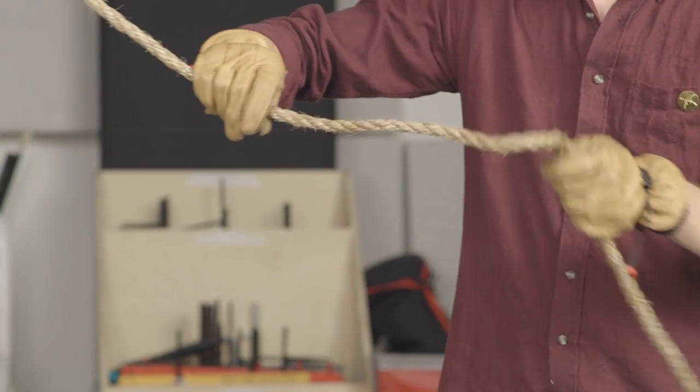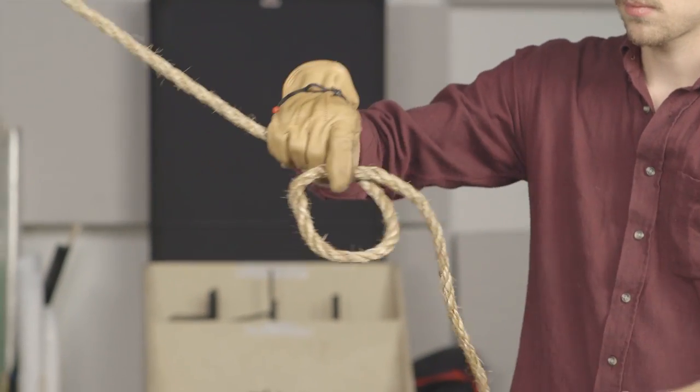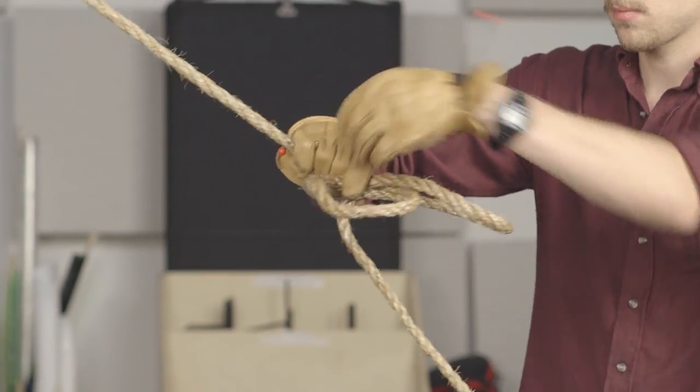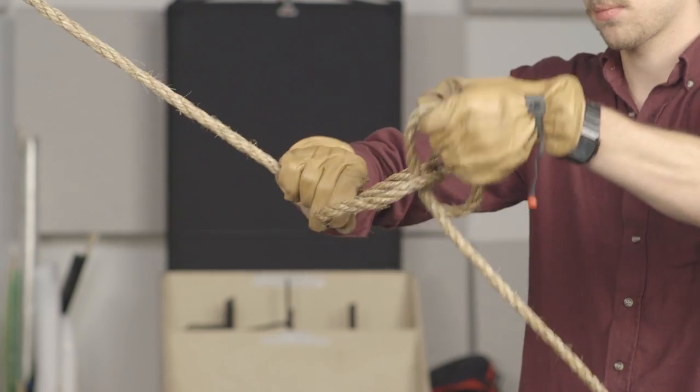Tie a slip knot on the standing end. If you tie it too close to the anchor you will not be able to tighten your load down, but if it is too far away you won't be able to reach the knot.